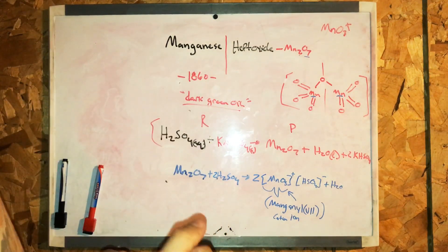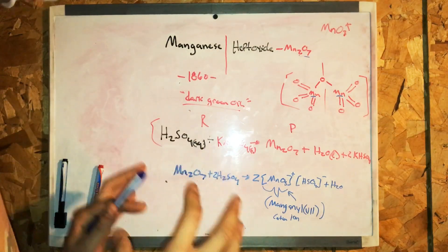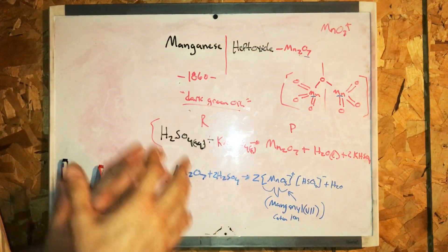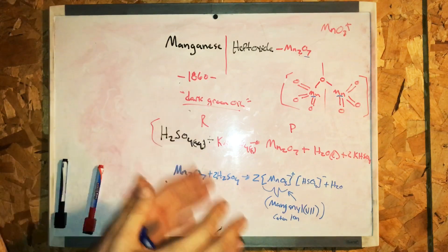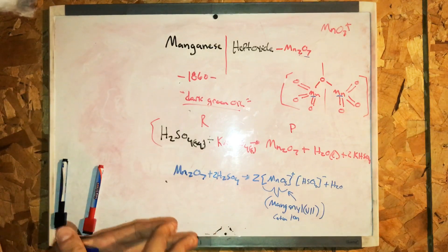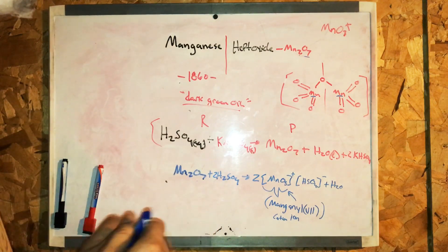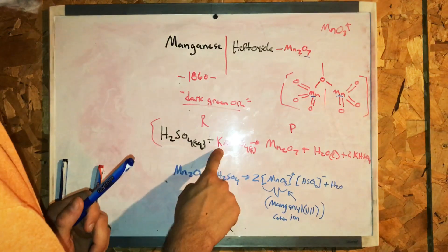Anyway, manganese heptoxide arises as a dark green oil in appearance by addition of the following two reagents. First, concentrated hydrochloric acid, plus solid potassium permanganate.